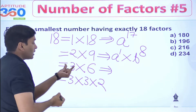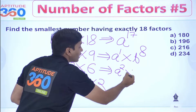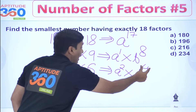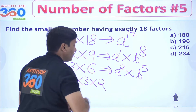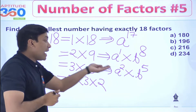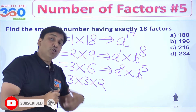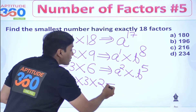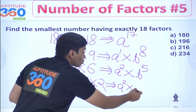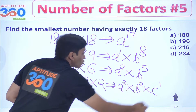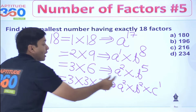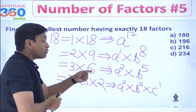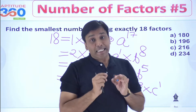For the case 3 into 6, the form would be A squared into B to the power 5 — because 2 plus 1 is 3 and 5 plus 1 is 6, giving 18 factors. And for 3 into 3 into 2, we can write the number as A squared into B squared into C to the power 1 — because 2 plus 1 is 3, 2 plus 1 is 3, and 1 plus 1 is 2, giving 3 into 3 into 2 which is also 18 factors.